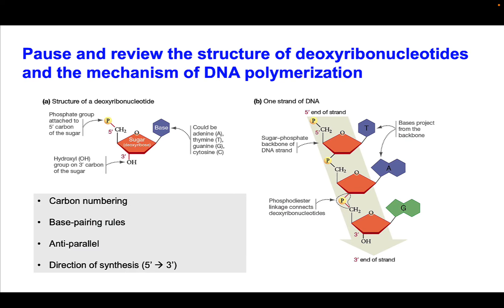Let's start to consider what's going on during S phase. I would recommend that you pause and review the structure of deoxyribonucleotides and the mechanism of DNA polymerization. If this isn't totally clear, go back to that prerecorded lecture. Some things you want to refresh on include the carbon numbering system. Here we have our sugar, our deoxyribose sugar, and the carbons are numbered 1, 2, 3, 4, 5. You should be able to recognize that numbering system and tell me what's attached to the 3 prime, 5 prime, and 1 prime carbons.